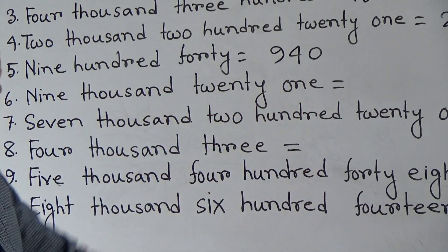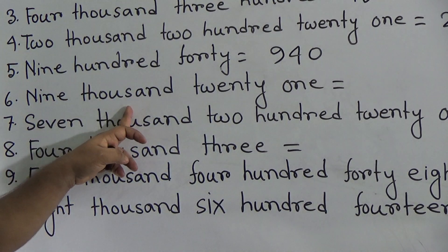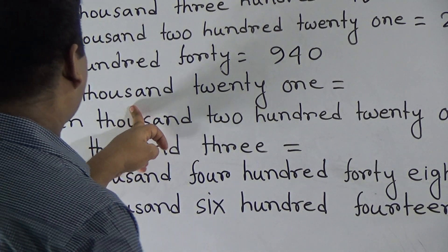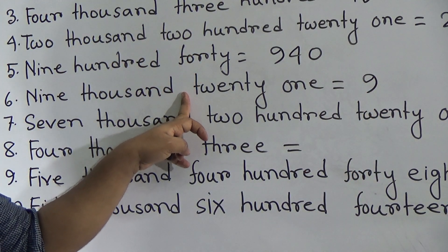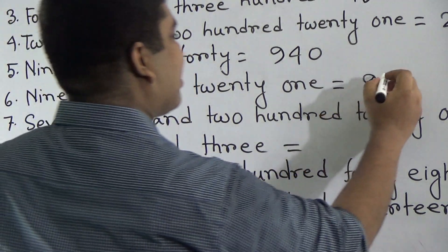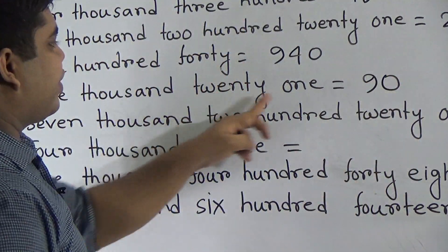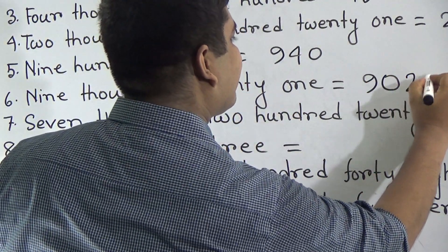Next, 9021. 9000. So, first of all, we write 9. Here, 100 place is absent. For this reason, we give as 0 and 21. So, we write 21.